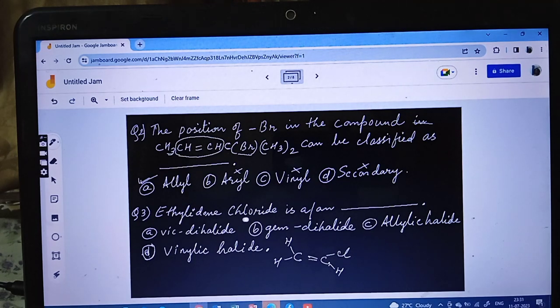Now let's see question number 3. Ethylidine chloride is? Vicinal dihalide, geminal dihalide, allylic halide, vinylic halide. We need to draw the structure here. Ethylidene means 2 carbon atoms, and then 'ene' means double bond. Chloride hai means Cl hai, but D is there meaning dichloride - 2 chlorine atoms.